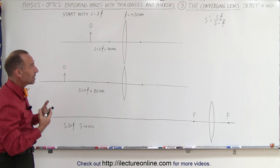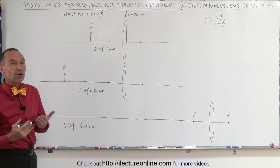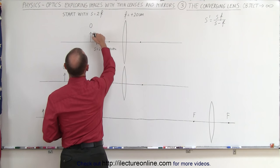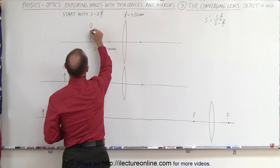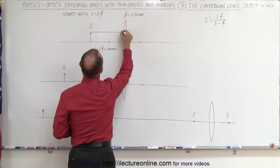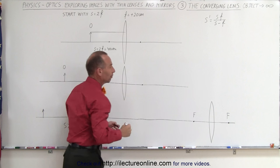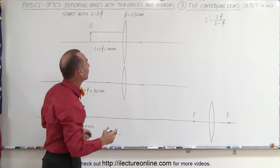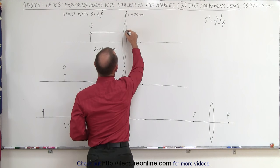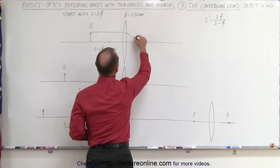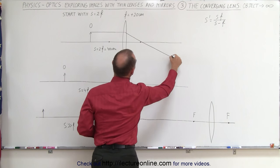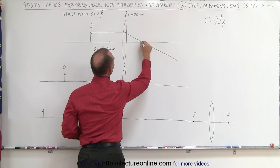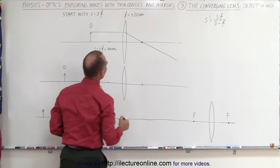The way to find the image graphically is to draw two lines. The first line you draw parallel to the optical axis from the top of the object to the lens. Being a converging lens, it will converge the ray down to the focal point on the other side. Let me move the focal point over a little bit so you can see that it actually meets the focal point.